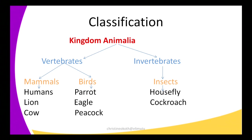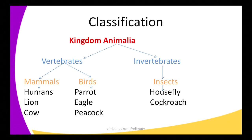On the other side we have the invertebrates — the animals that do not have a backbone. Under the invertebrates we still subdivide these organisms into insects. We look at external or internal features that make these organisms be classified as insects. For example, insects have three body parts, three pairs of legs, and wings. So under these we classify the housefly and cockroach. By doing this I am classifying organisms — grouping them in various groups based on their structures and ways of life.